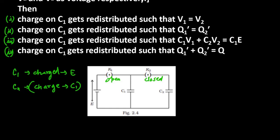C1 has charged in the second case. The charge was Q1' as they told us to take Q1', so Q1'. Now as our battery is disconnected, we will redistribute and we will also have Q2'. It has obtained charge on C2. According to the law of conservation of charges, we know that total charge after redistribution will be Q equal to Q1 plus Q2'.